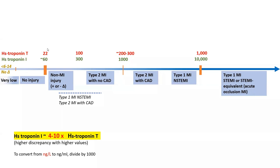There is usually an injury cutoff at the 99th percentile for the assay. Keep in mind there are multiple high-sensitivity troponin assays: troponin T and troponin I. For high-sensitivity troponin T, which is the assay by Roche, and for high-sensitivity troponin I, there are many manufacturers. Cutoffs are different. Importantly, troponin I is usually 4 to 10 times higher than troponin T for the same degree of myocardial injury. Know that when you get a transfer from another institution using high-sensitivity troponin I.